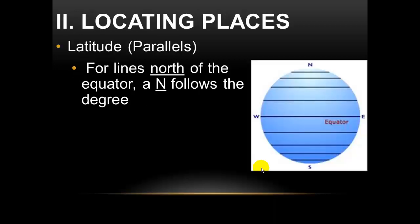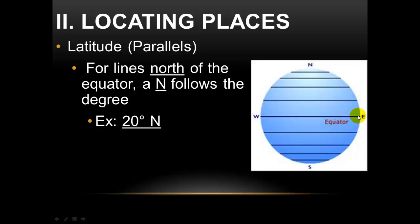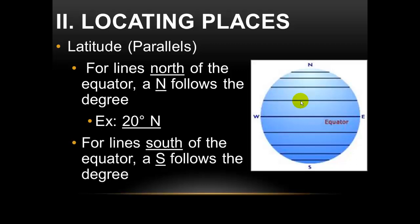All lines of latitude that are north of the equator have an N following the degrees. For example, the first line above the equator would have a location of 20 degrees north. For lines south of the equator, an S follows the degree, so its measurement would be 20 degrees south.